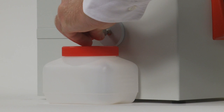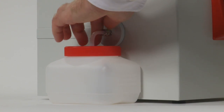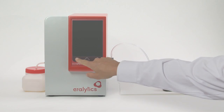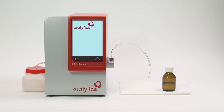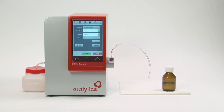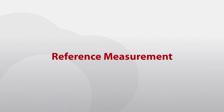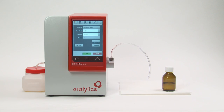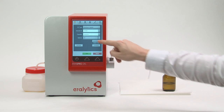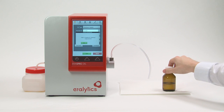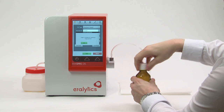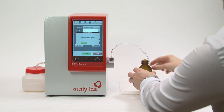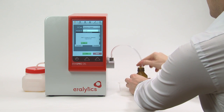Switch on the analyzer by pushing the power button on the front. Before the first measurement, after the instrument has been turned on, a reference measurement using n-heptane must be made. Click the reference button, insert the inlet tube into the n-heptane container, and click OK.